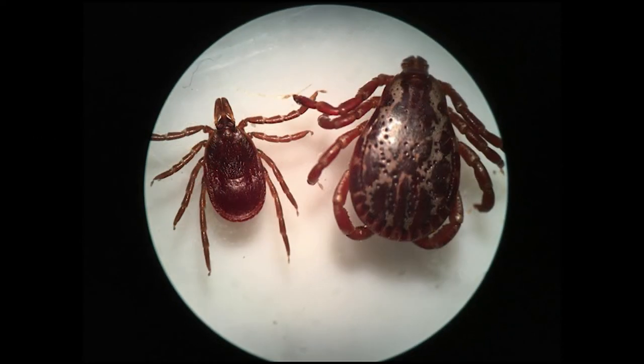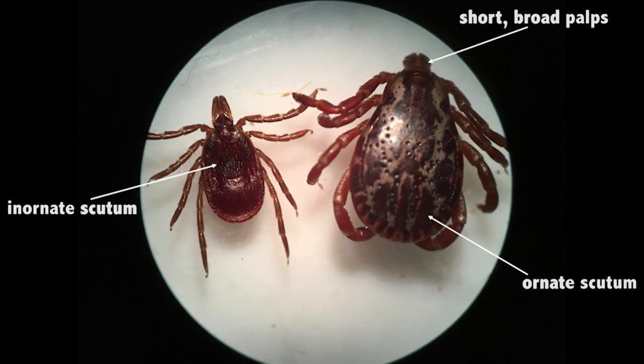Now let's flip the ticks right side over. The tick on the left has an inornate scutum — it doesn't have any patterning — and only covers half the back, so this is definitely a female tick. This tick is a black-legged tick, Ixodes scapularis. On the right-hand side, we see that the scutum covers the entire back of the tick and is patterned. If you look carefully, you can see short, broad palps. This is a male American dog tick, or Dermacentor variabilis.